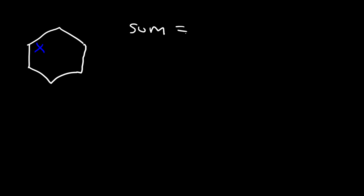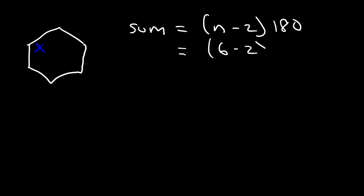So now it's your turn. Find the measure of each interior angle inside a hexagon. First we need to find the sum of all interior angles using the same formula: n minus 2 times 180. A hexagon has six sides, so six minus 2 is 4. That gives us 4 times 180, which is 720.